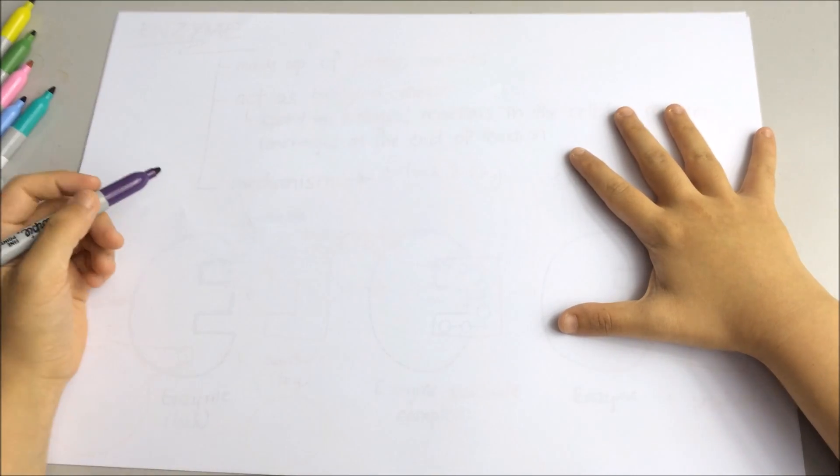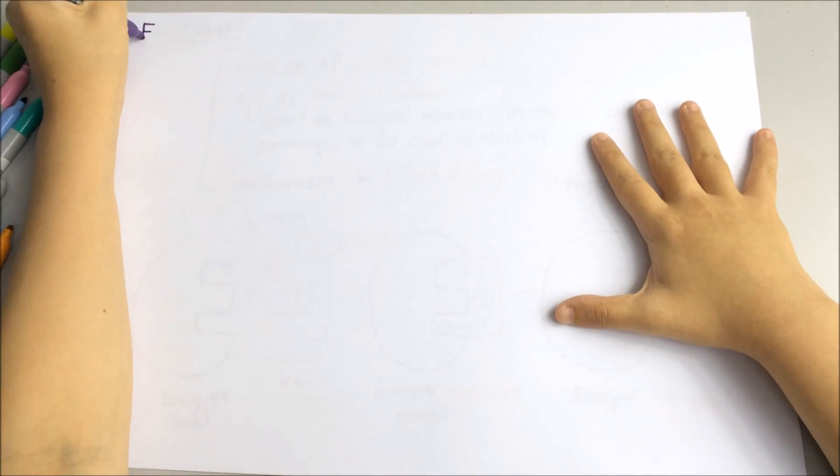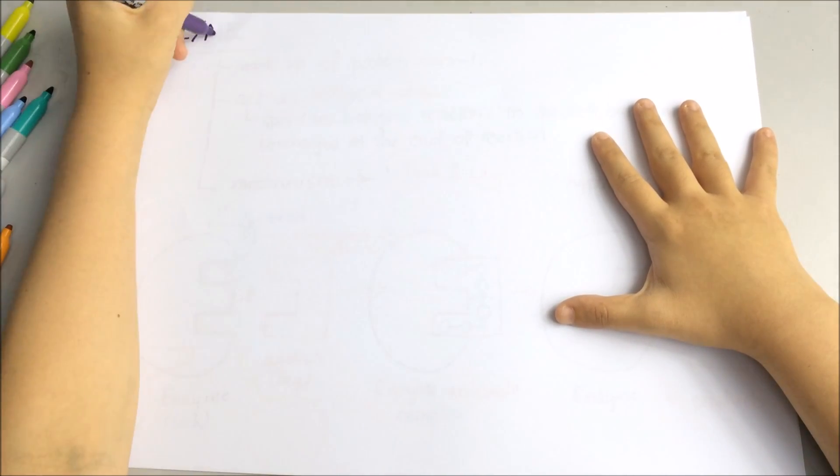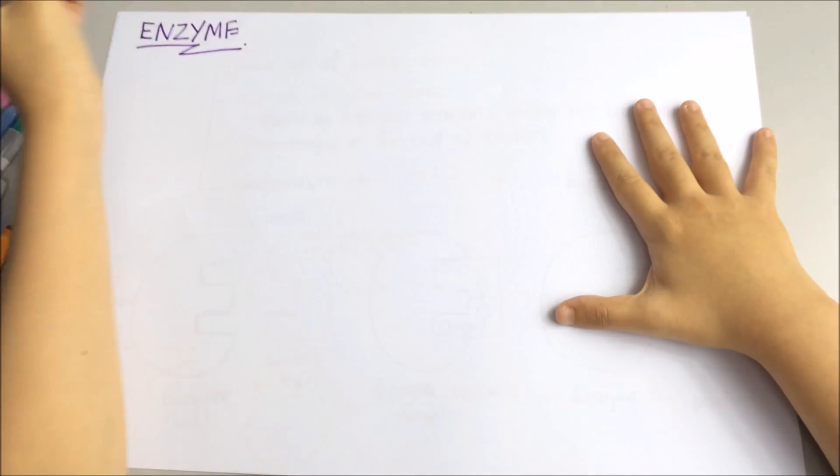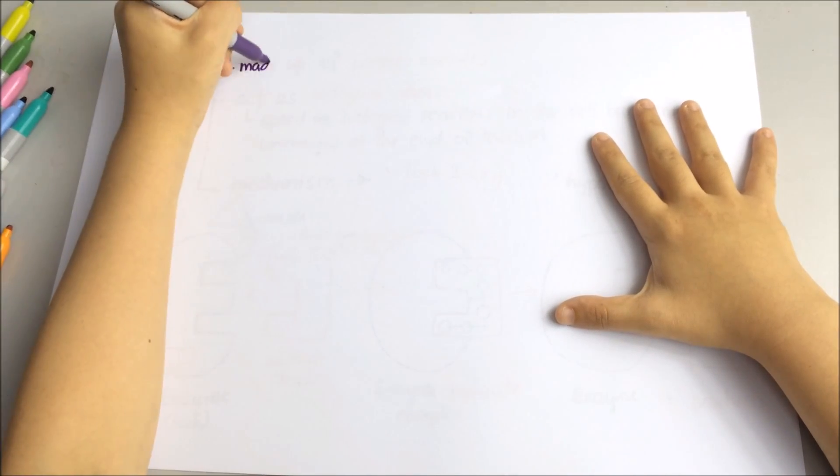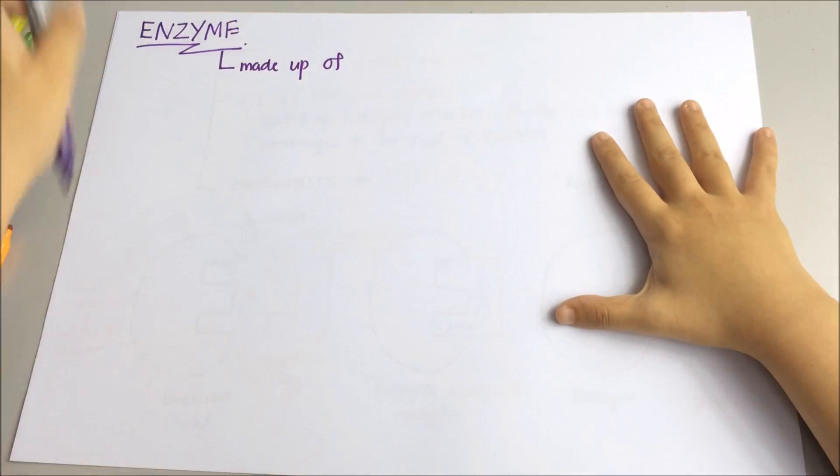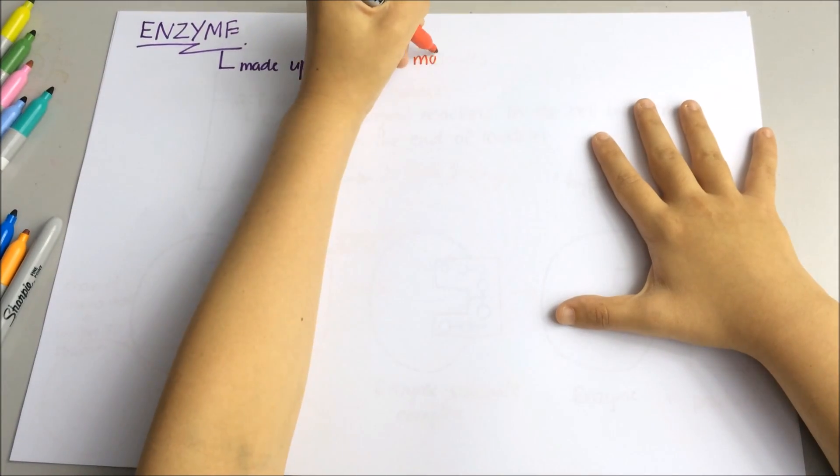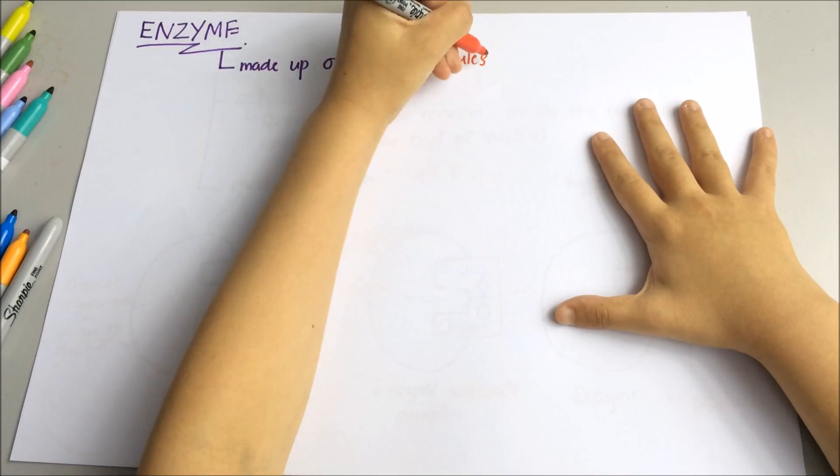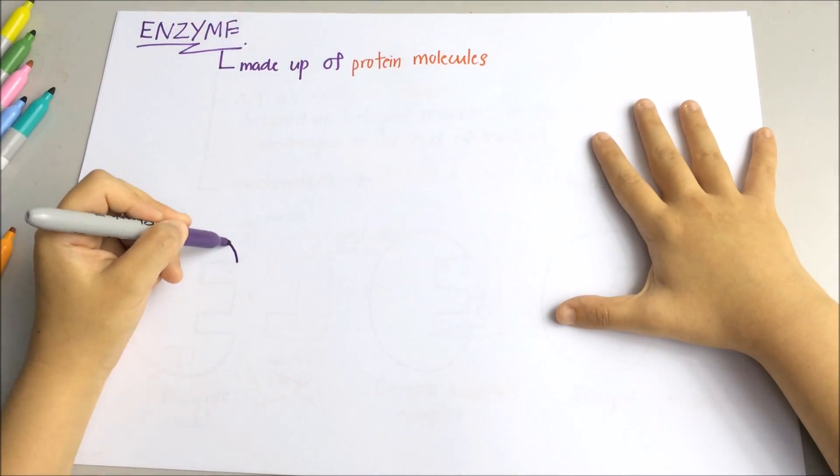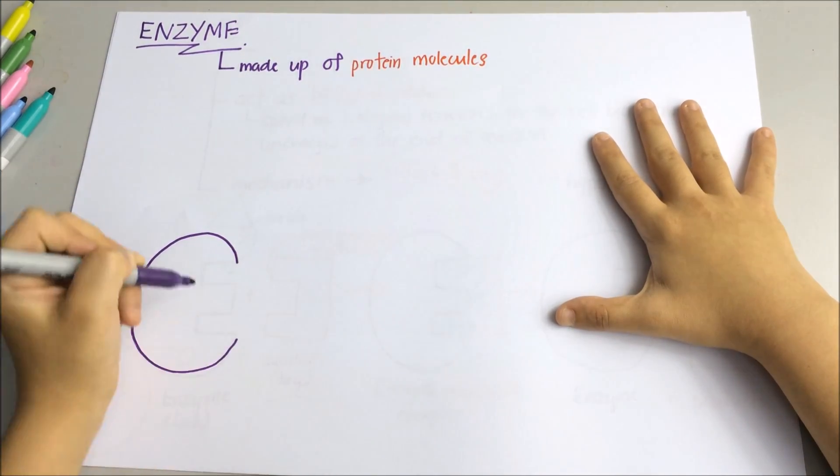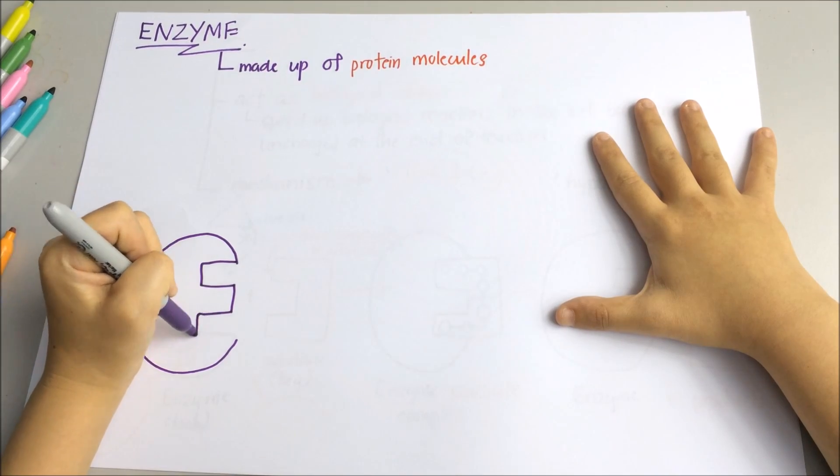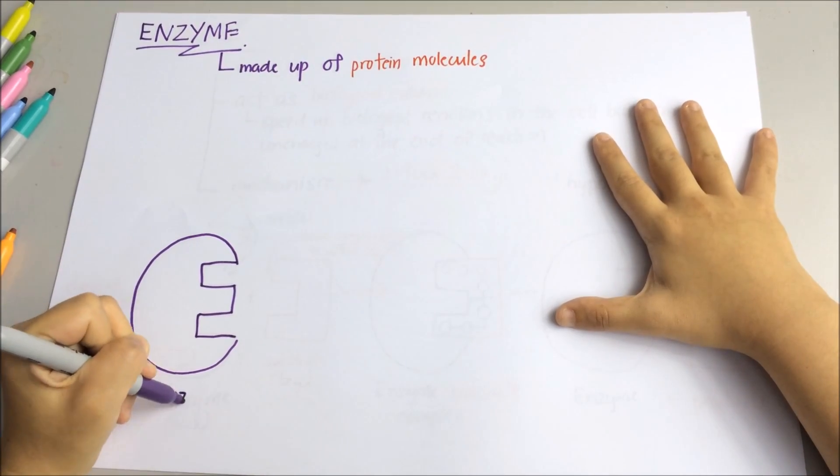Hi everyone, welcome to today's video. I'll be talking about enzymes. So what is an enzyme actually? Enzymes are protein molecules and they are made up of amino acids. Remember, enzymes are protein molecules. I'm now drawing an enzyme.